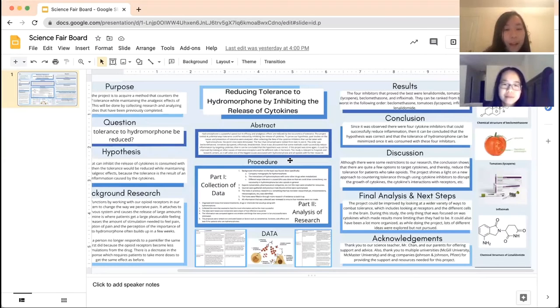We ranked them in the order that we did because both infliximab and lenalidomide have a negative interaction with hydromorphone. The interaction between lenalidomide and hydromorphone was more deadly which is why it was placed last and beclomethasone is first because it's more effective than tomatoes even though it has more side effects and after some weighing we decided to rank it the way we did.